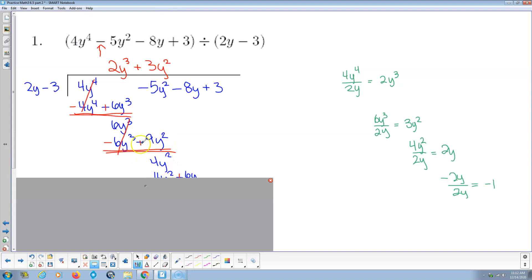So leading term, 4y squared divided by leading term there, 2y, that gives me 2y. So there's the 3rd term in our quotient, 2y. Multiply back, 2y times 2y is 4y squared, 2y times negative 3 is negative 6y. We subtract, change the signs and add. So the y squareds cancel, 6y minus 8y is negative 2y.